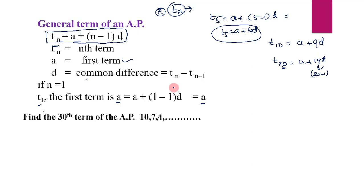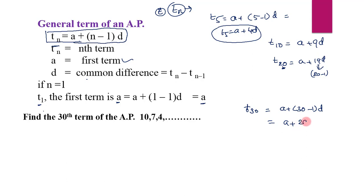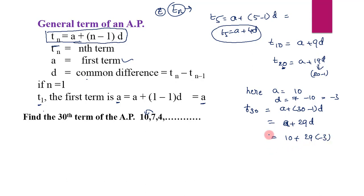Example: Find the 30th term of the AP: 10, 7, 4 and so on. T30 = a + (30-1)d = a + 29d. Here a = 10 and common difference d = 7 - 10 = -3. Substituting: T30 = 10 + 29×(-3) = 10 - 87 = -77.